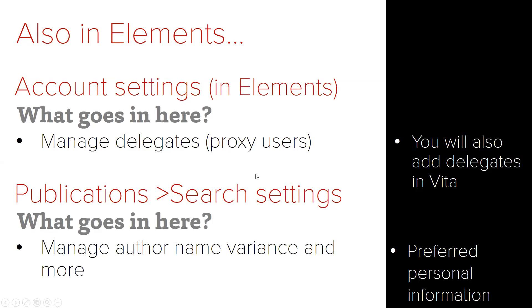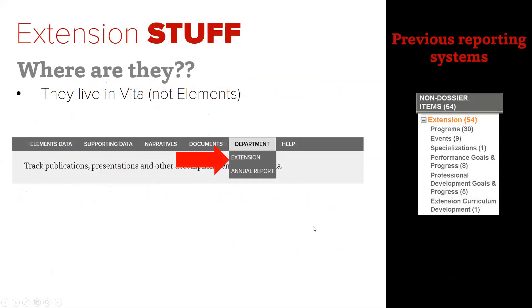Under Account Settings in Elements, you can manage delegates — if your supervisor has asked you to add them as a delegate, this is where you do it. You also need to do it in the VITA section. Under Publications Search Settings, you can add author name variants — for example, 'Lewis, Deborah K' versus 'Lewis, DK' — so the system can find all your publications.